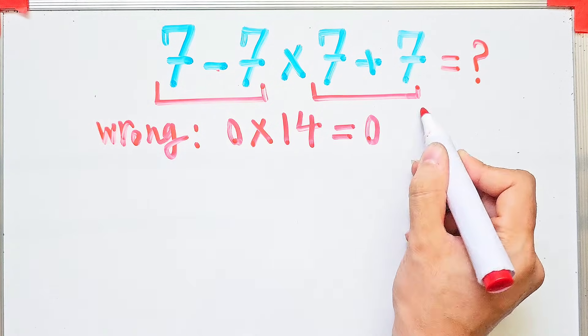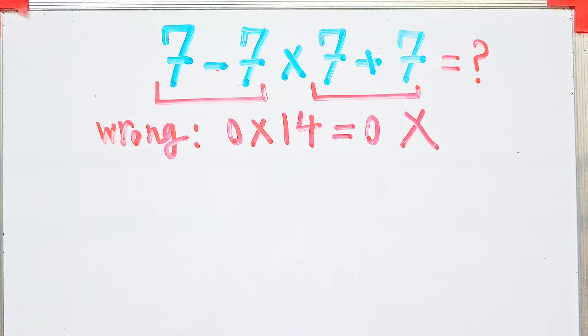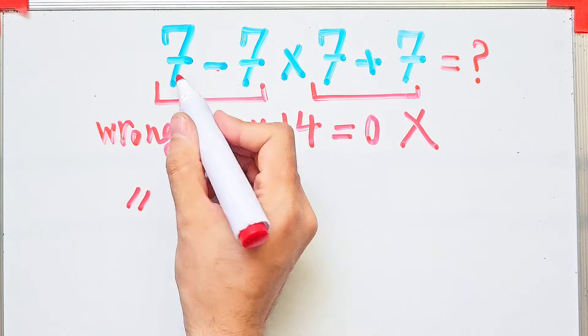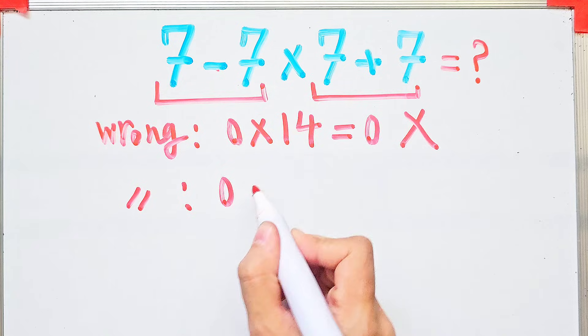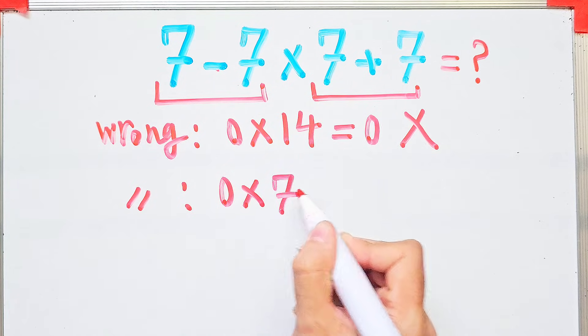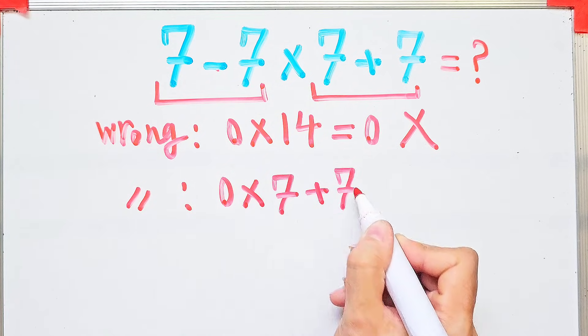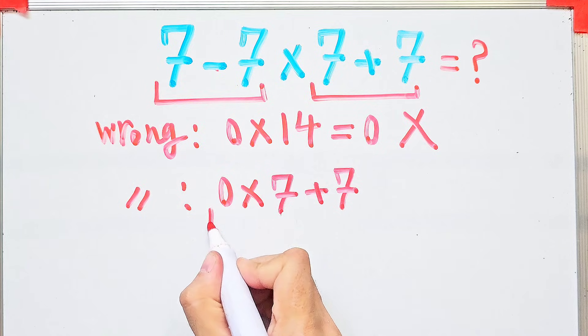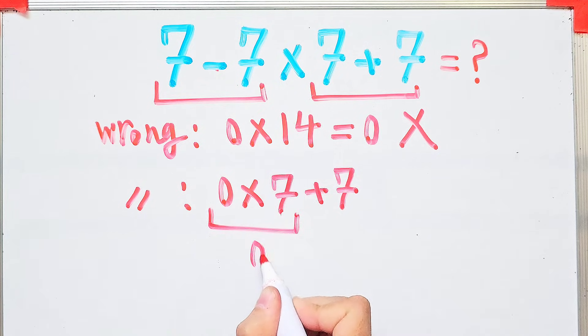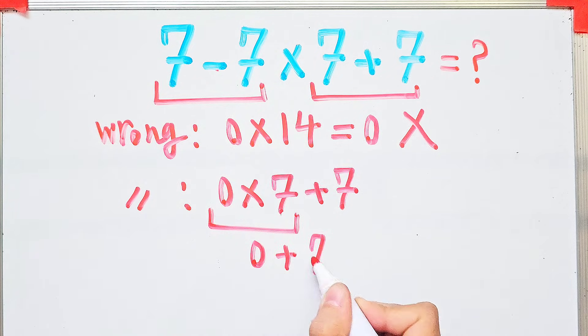But this answer is wrong. Again, some people start from the left and simplify the questions: seven minus seven equals zero, zero times seven, then plus seven. Zero times seven equals zero and zero plus seven equals seven, but again this answer is definitely wrong.